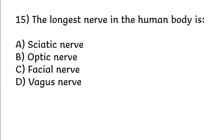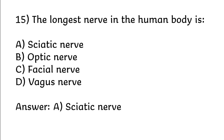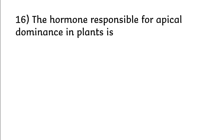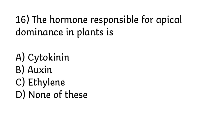Correct answer is option C: bicarbonate ions. The longest nerve in the human body is: sciatic nerve, optic nerve, facial nerve, vagus nerve. Correct answer is option A: sciatic nerve. The hormone responsible for apical dominance in plants is: cytokinin, auxin, ethylene, none of these.